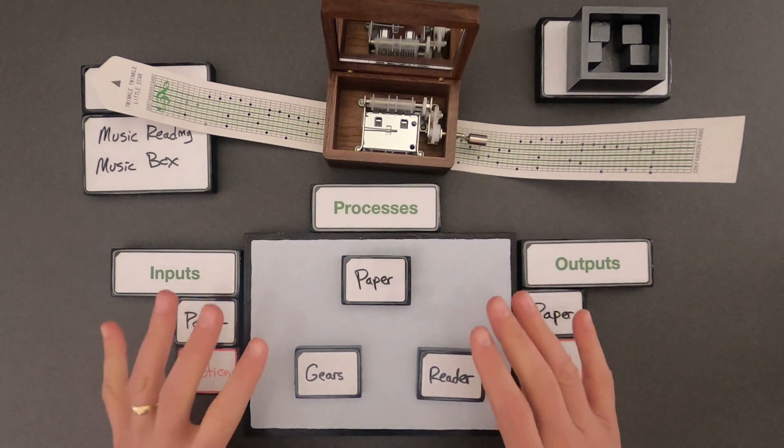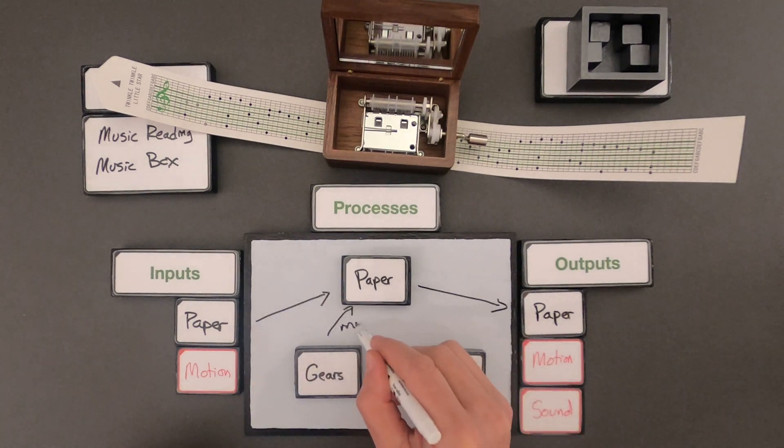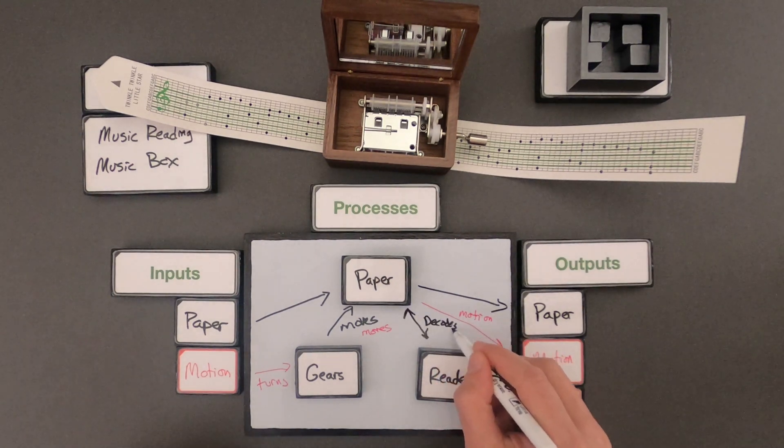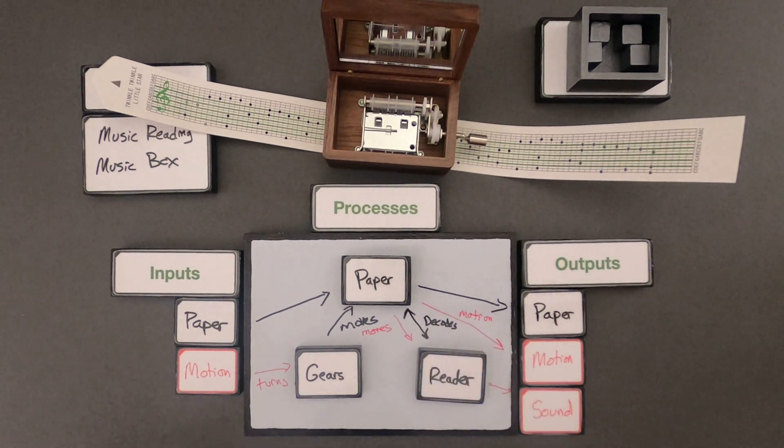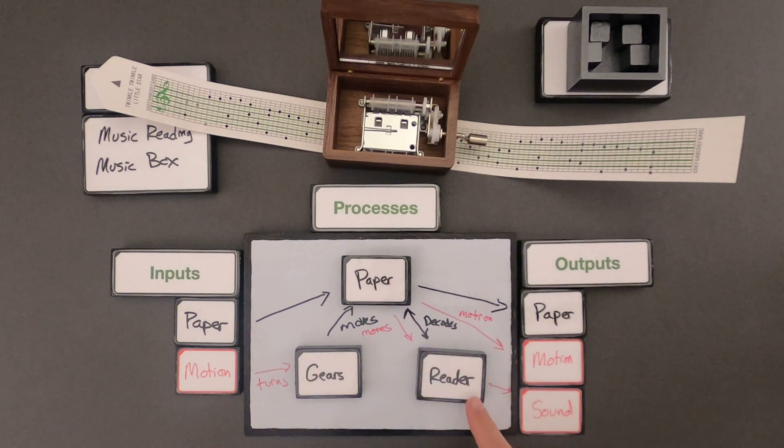So now that we've got inputs, outputs, and then the components on the inside, let me draw in what I think are all the interactions that take place from inside to outside. Okay, so to think through my thinking I've got motion going in which turns the gear which moves the paper. There's also a decoding taking place between the paper and the reader which eventually creates sound energy moving out.